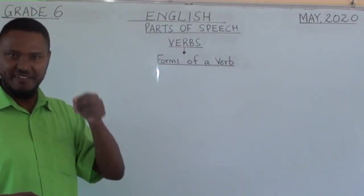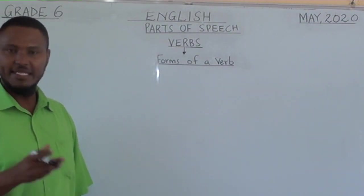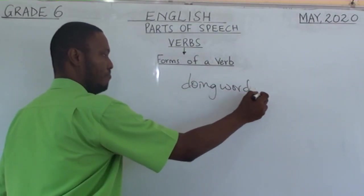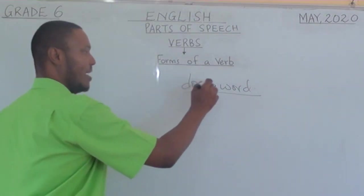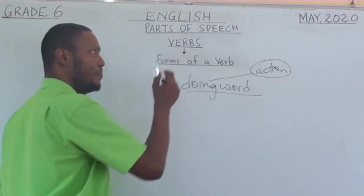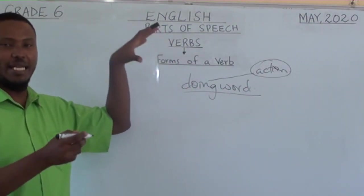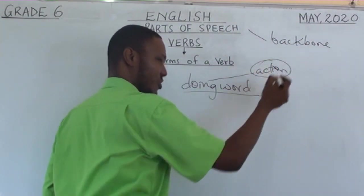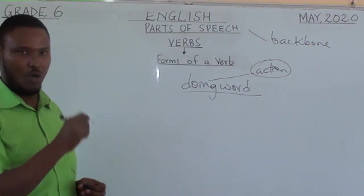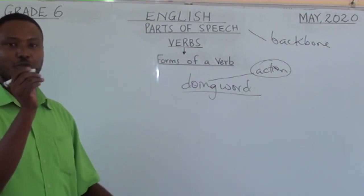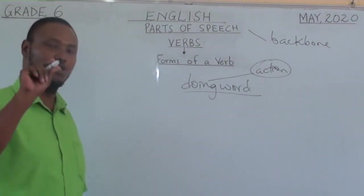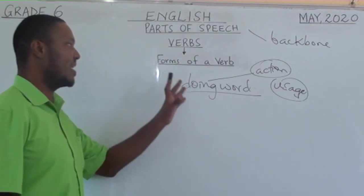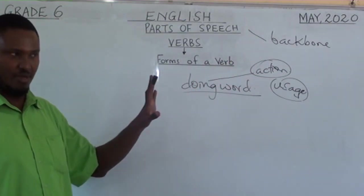What is a verb? Simply speaking, a verb is a doing word. It shows action. Doing is action. Parts of speech are the backbone of language. Each and every word in the language falls under a certain part of speech according to its usage in a sentence. So, a verb is a word that shows action.